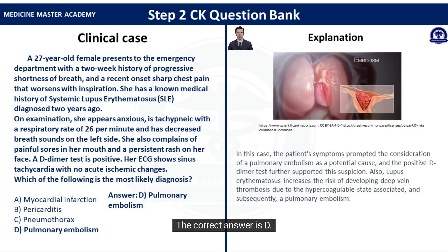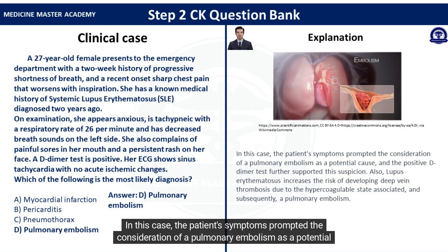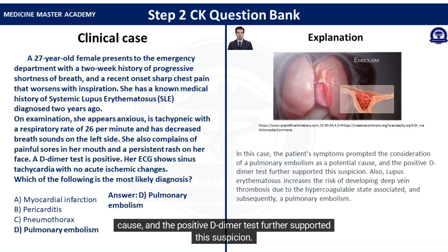The correct answer is D, pulmonary embolism. In this case, the patient's symptoms prompted the consideration of a pulmonary embolism as a potential cause, and the positive D-dimer test further supported this suspicion.